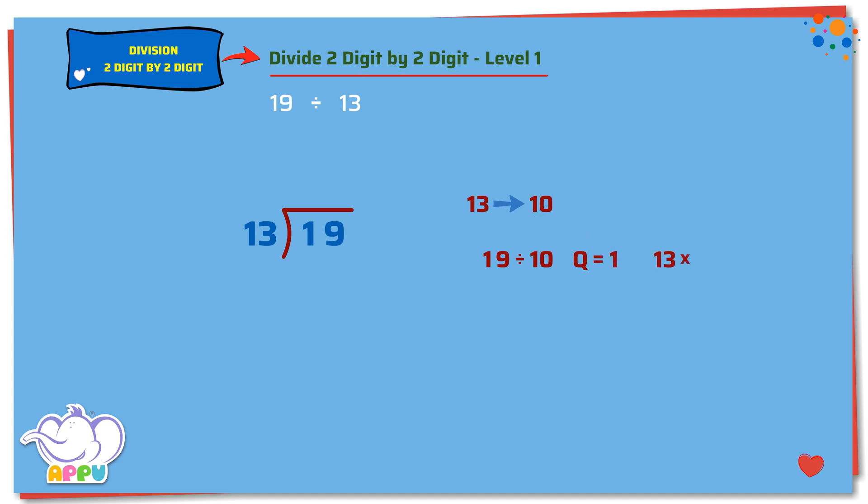We multiply. 13 times 1 equals 13, which is just less than 19. So, it takes 1, 13.